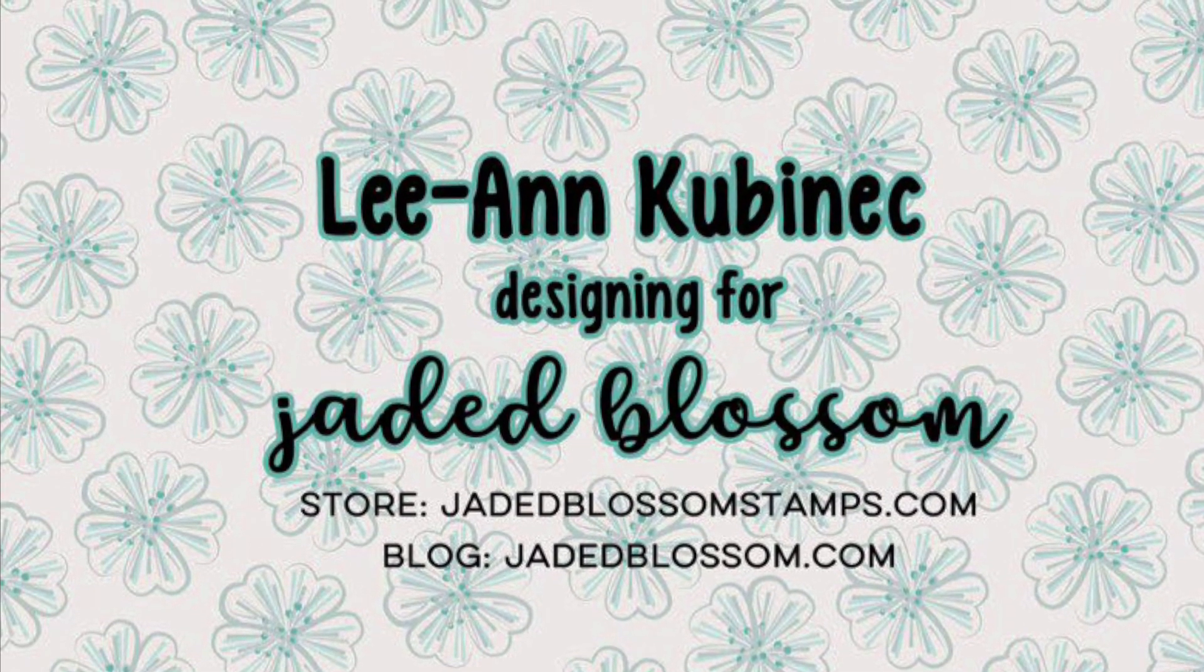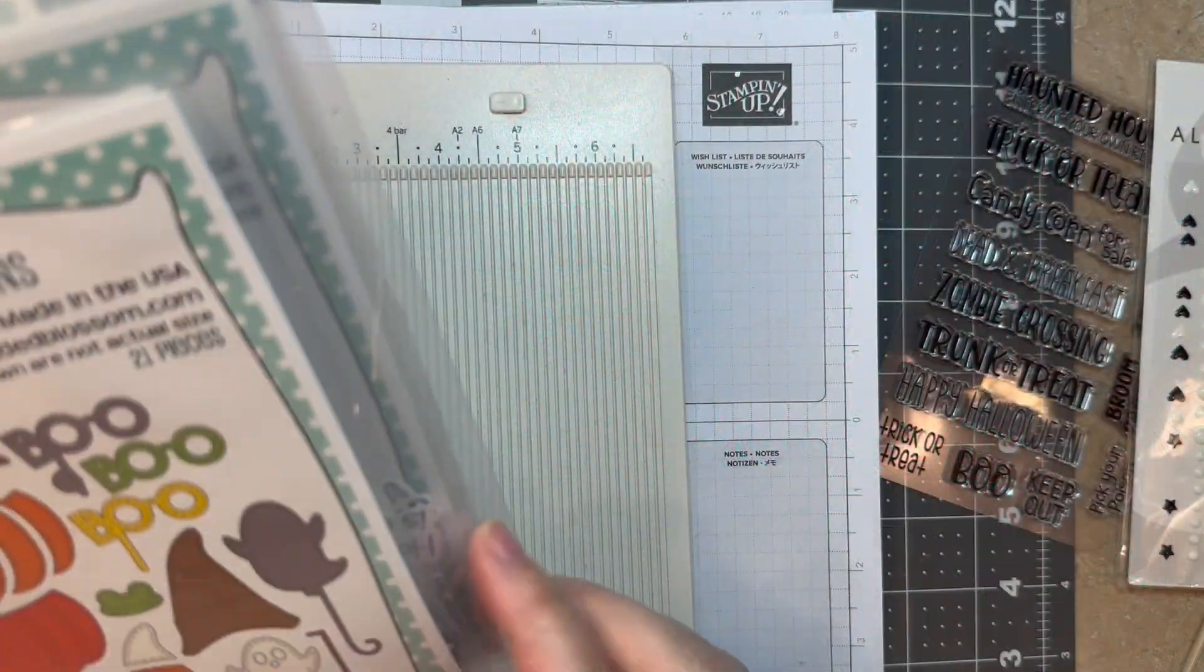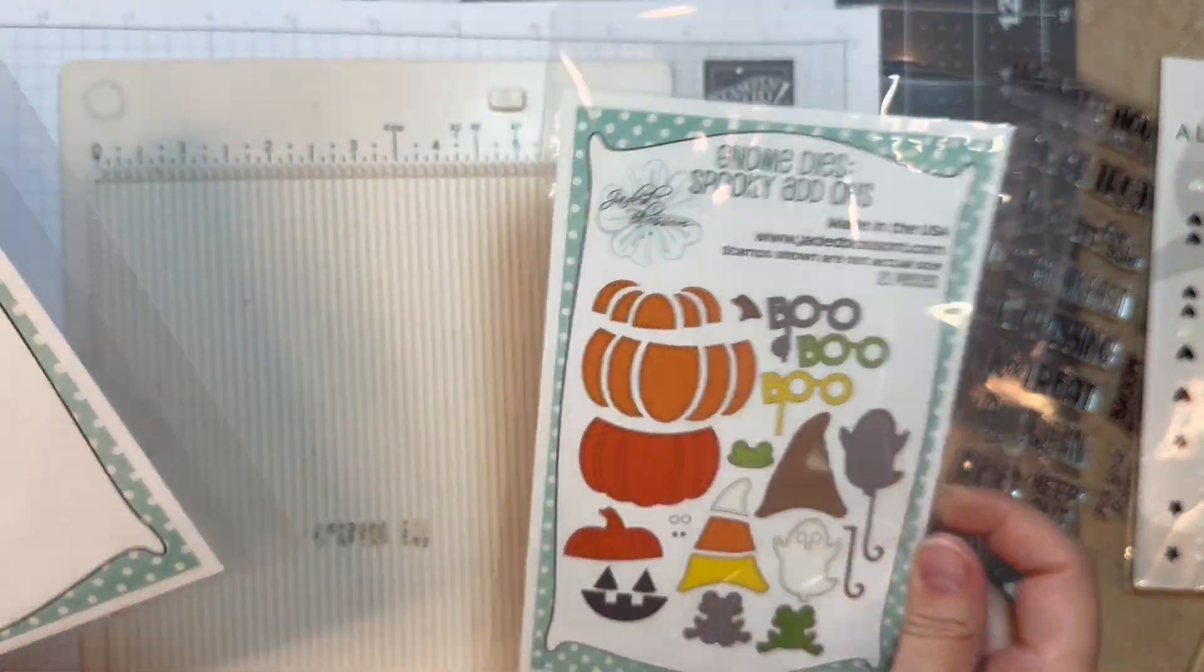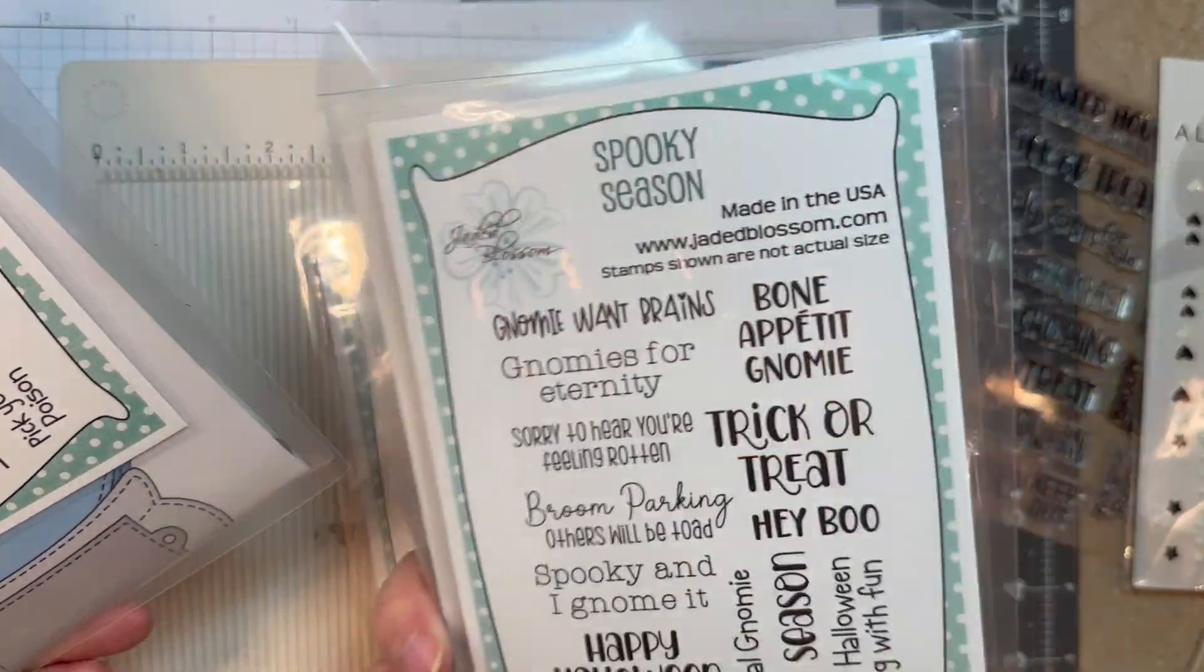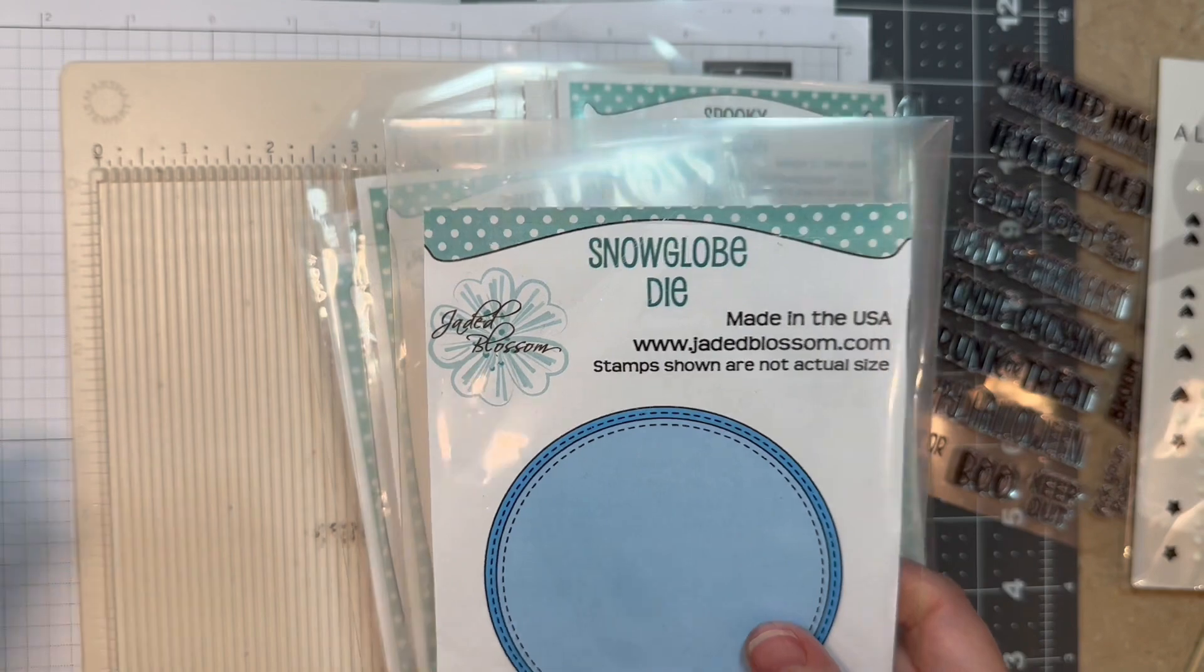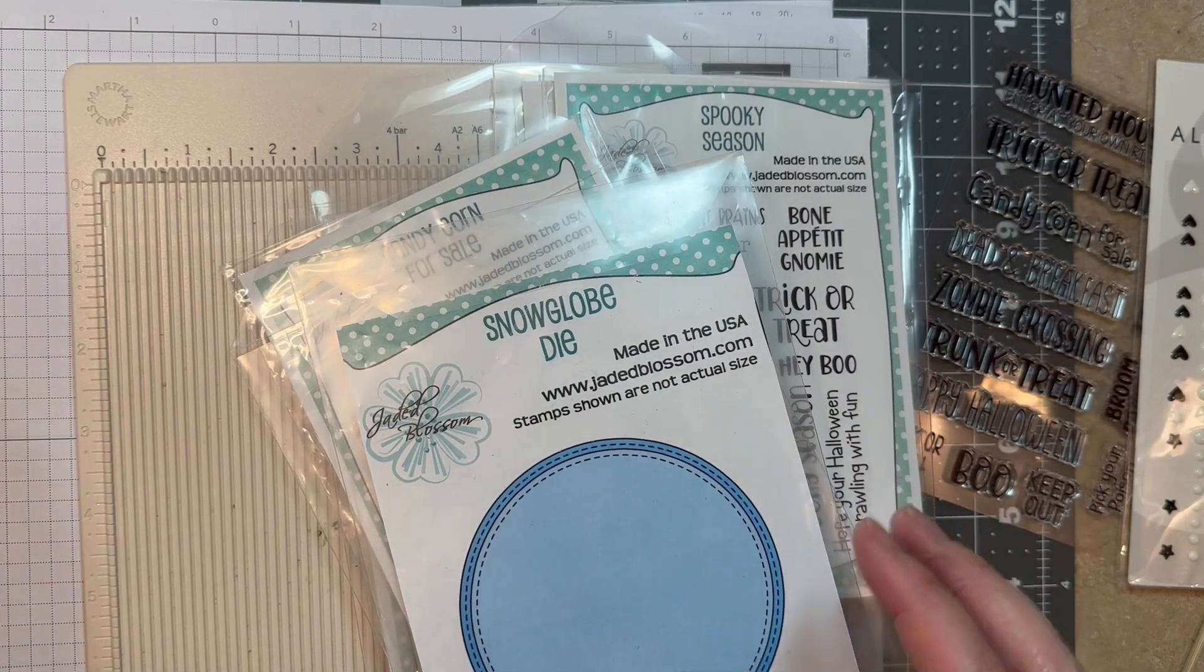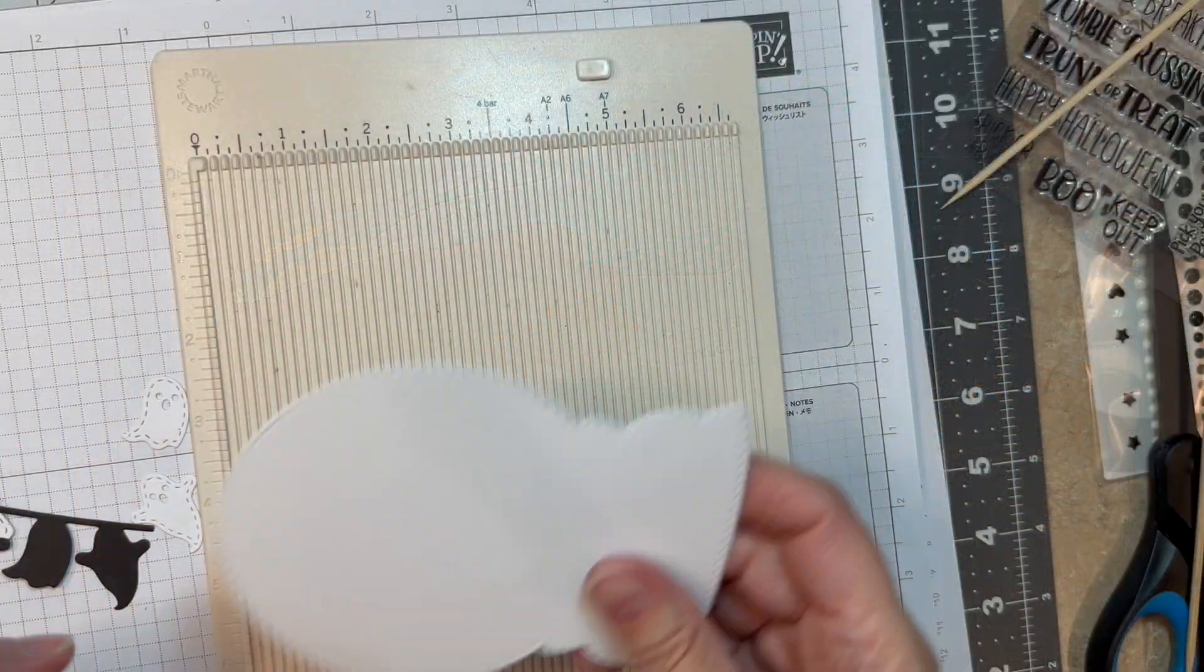Hi everyone, Leanne here from Jada Blossom and I have a fun shape card to share with you today. I'm using Jada Blossom's Gnome Die Spooky Add-ons, their Gnome Die Sign Add-ons, their Spooky Season Stamp Set and Outline Dies. I'm using the Candy Corn For Sale Stamp Set and the Snow Globe Die. I did put these together on the Gnome Die Spooky Add-ons Assembly video, so check that out.